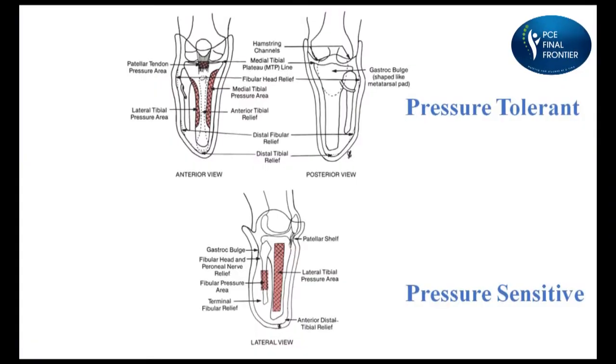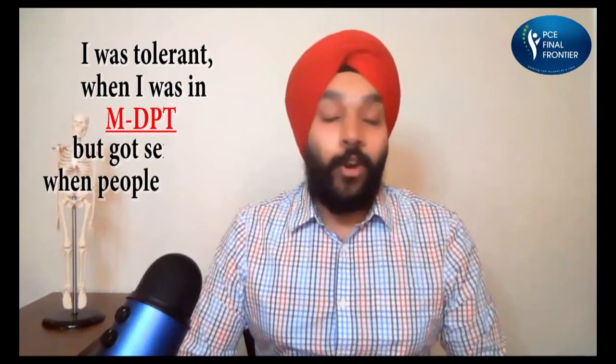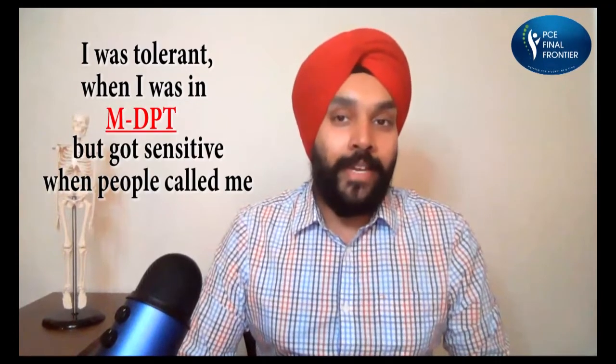A lot of people have demanded this kind of video where you can learn these mnemonics. So here you go — a fun way to remember pressure sensitive and pressure tolerant areas in transtibial amputation. Remember this mnemonic: 'I was tolerant when I was in MDPT but got sensitive when people called me fat fat.'